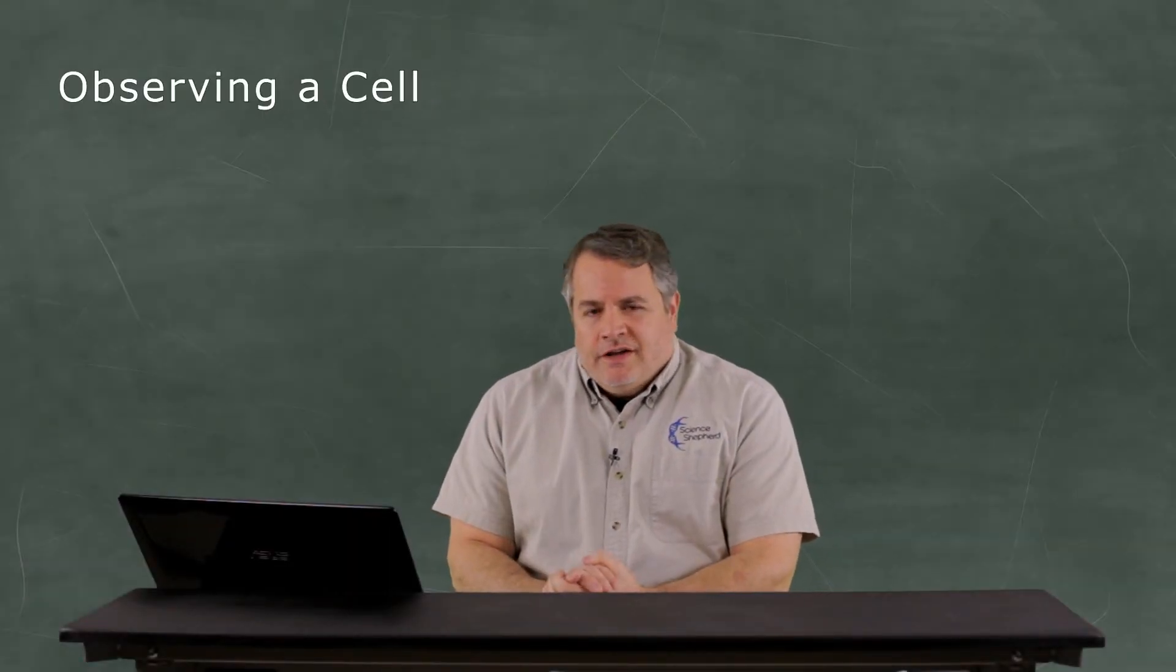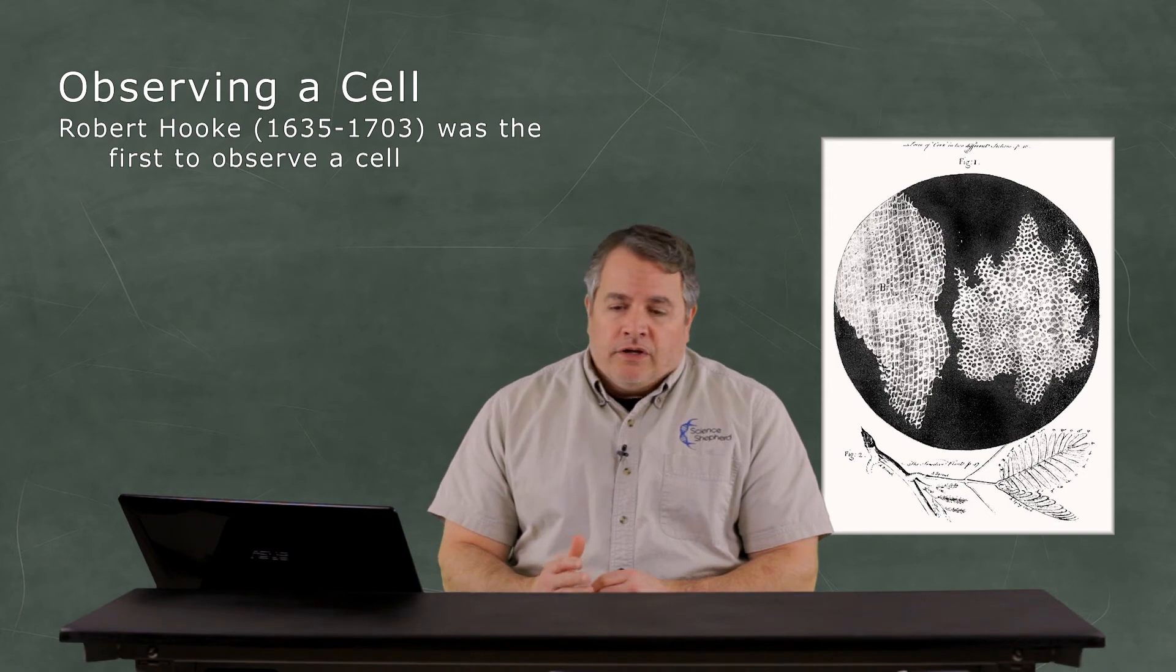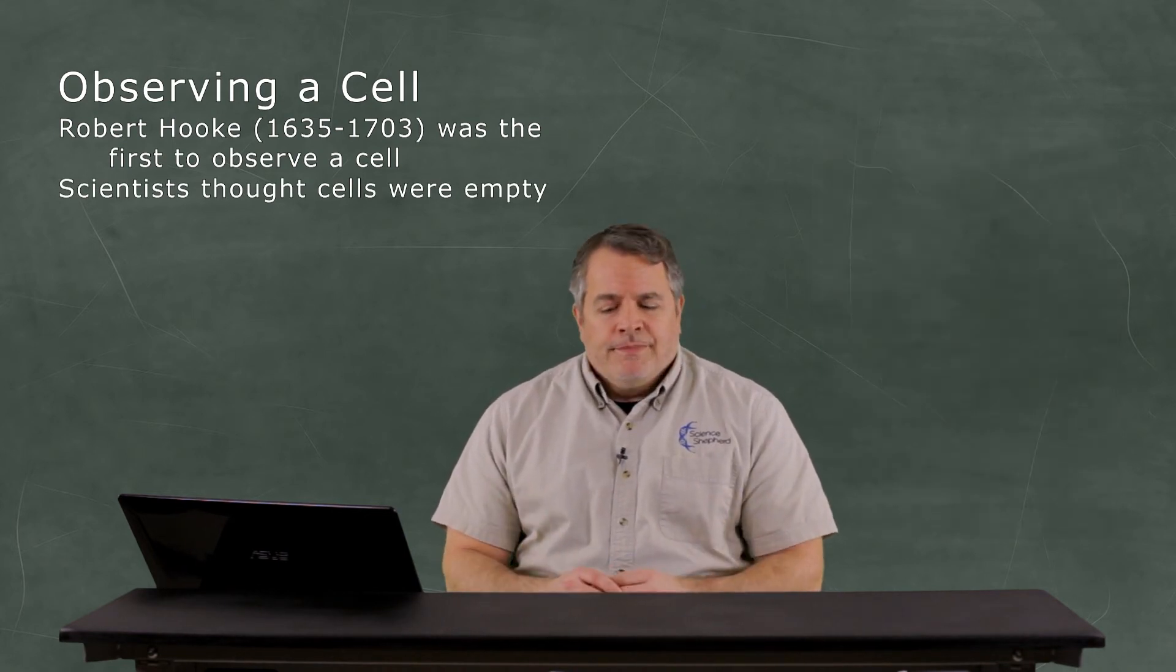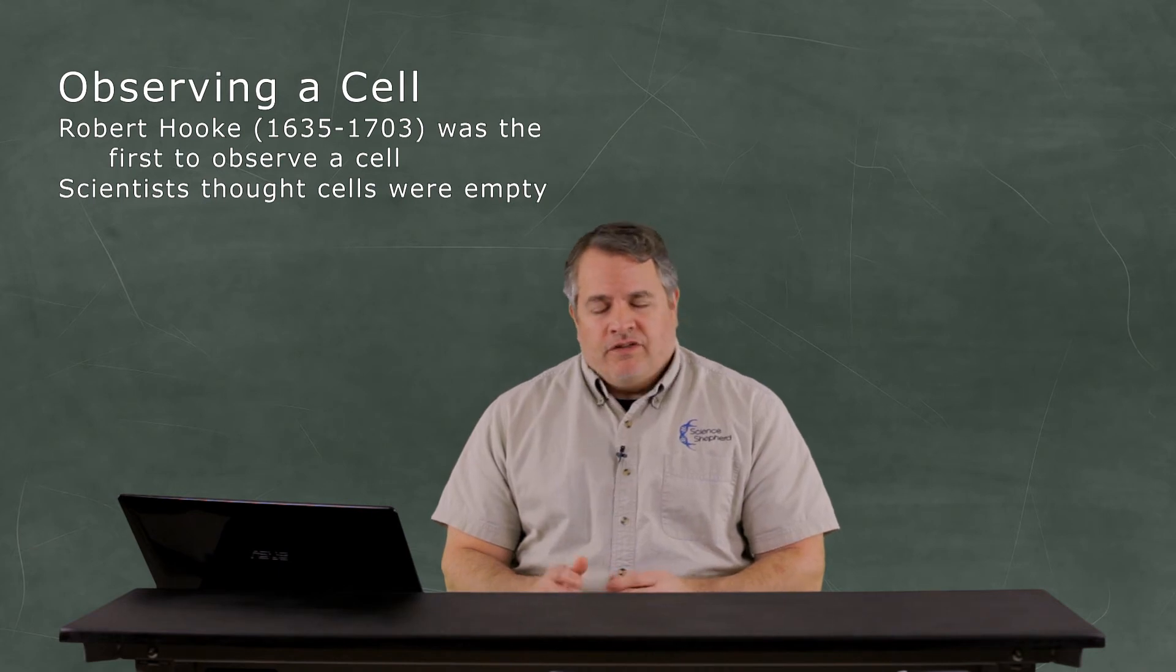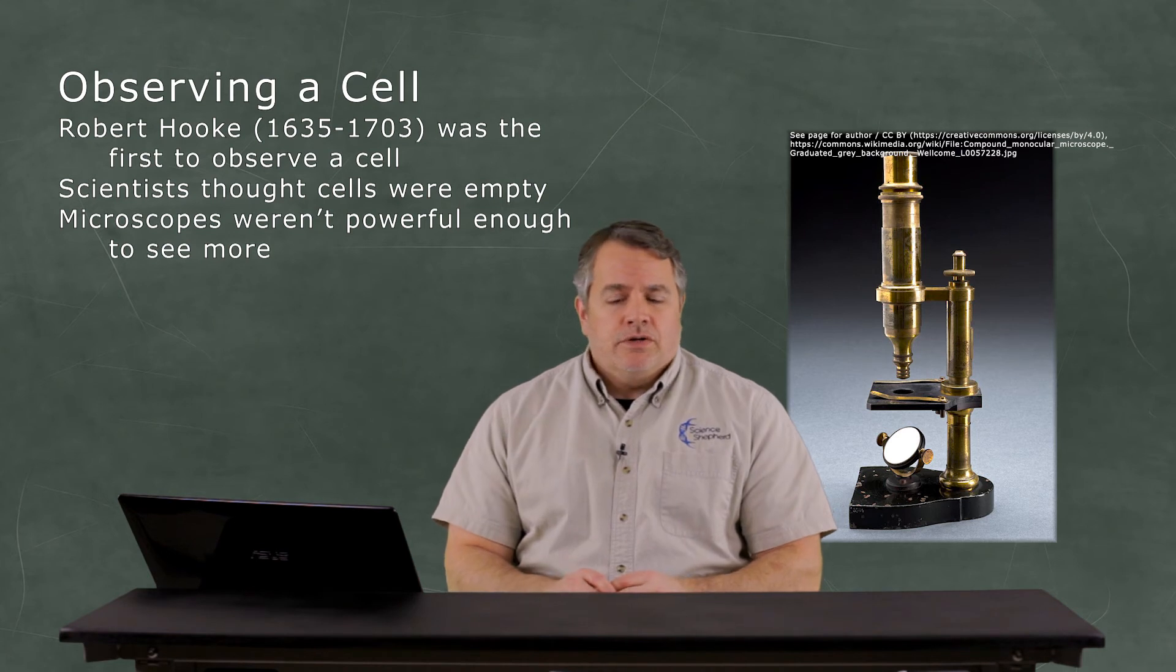The first person to see a cell with a microscope was a guy named Robert Hooke. About 350 years ago, he saw the first cell. And for a long time, scientists thought cells were basically empty, filled with air. They couldn't see anything. Obviously, the microscopes initially were not that powerful. They couldn't magnify things that large.